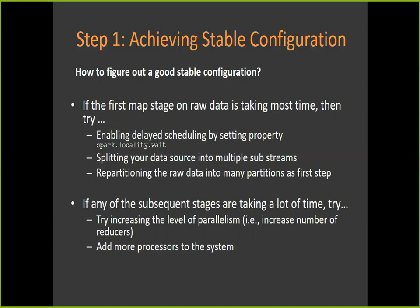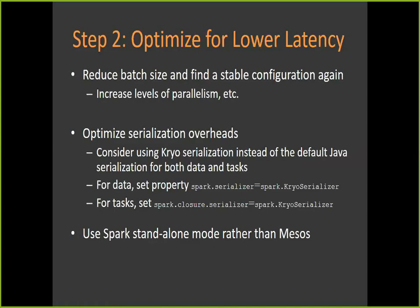Increasing partitions will speed up the map tasks. If any of the subsequent stages are taking a long time, try increasing the level of parallelism by repartitioning and increasing the number of tasks. Also keep increasing the driver memory, executor memory, and the number of cores on the nodes to improve throughput.